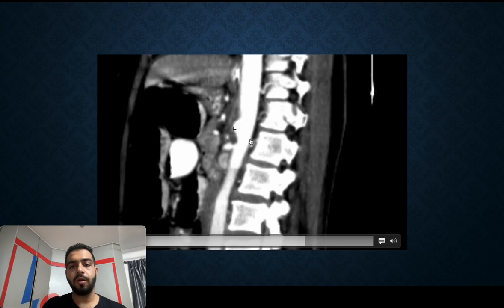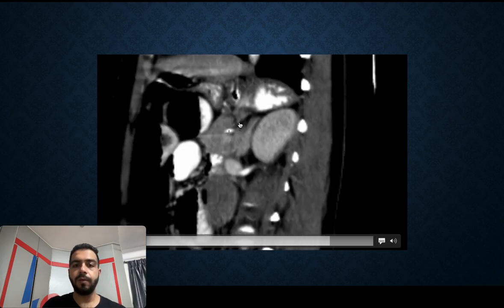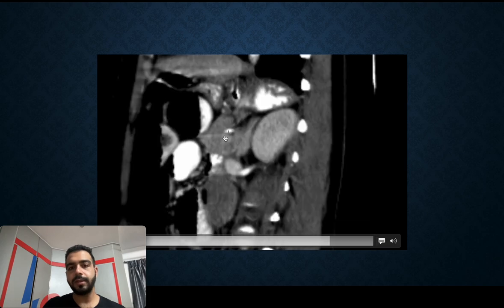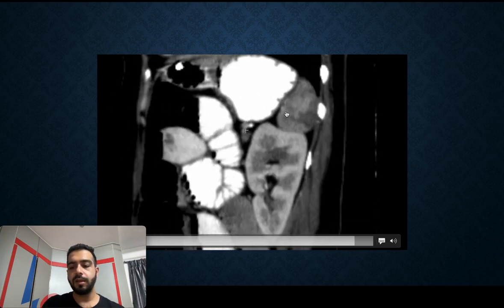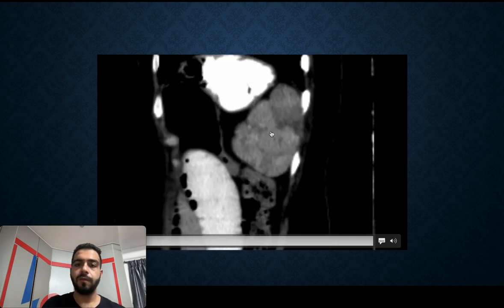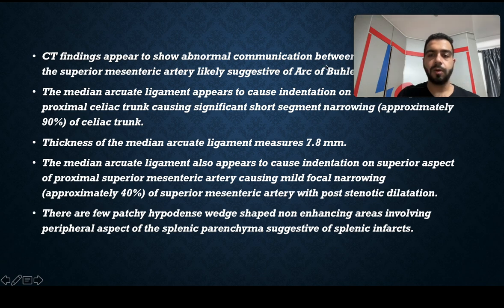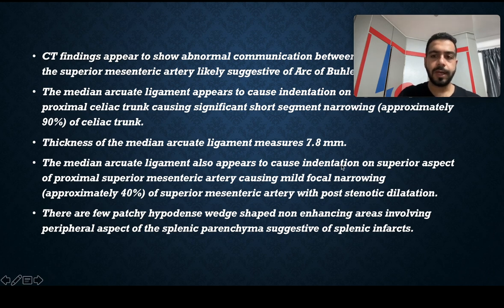A vessel communicating between the superior mesenteric artery and the distal aspect of the celiac trunk is identified — an anatomical variant called the arc of Bühler. Due to this variant, even though the proximal celiac trunk is completely blocked, all branches of the celiac axis are perfused, and the splenic artery is perfused, providing some blood supply to the spleen. Unfortunately, some areas of the spleen developed infarcts, seen as multiple patchy wedge-shaped hypodense areas. The median arcuate ligament causes significant narrowing of the proximal celiac trunk and indentation of the proximal superior mesenteric artery with post-stenotic dilatation.